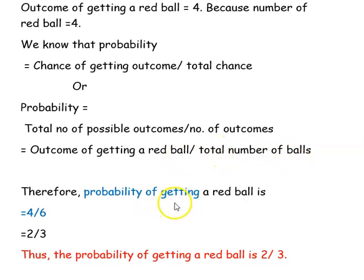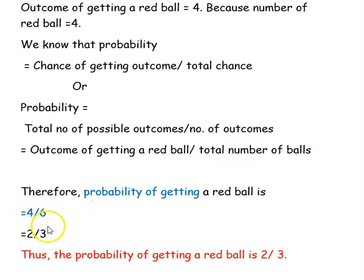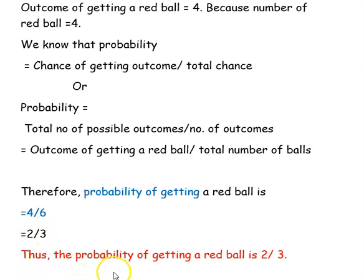The probability of getting a red ball — the total number of red balls is 4 and the total number of balls is 6. So the probability of getting a red ball is 4 divided by 6. If you simplify, you will get 2 divided by 3. Thus the probability of getting a red ball is 2/3.